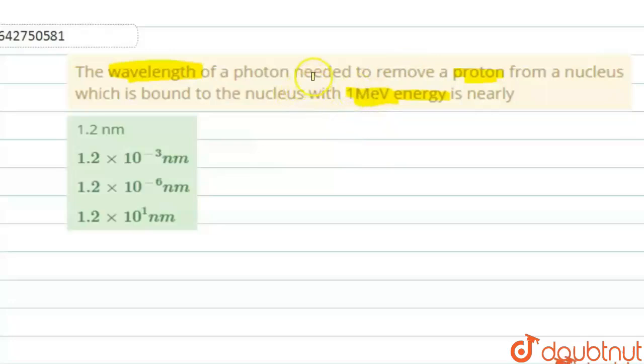You are supposed to calculate the wavelength. The energy is required based on the wavelength. Energy is given - the energy of the proton is given. How much wavelength should you calculate? Given that energy.